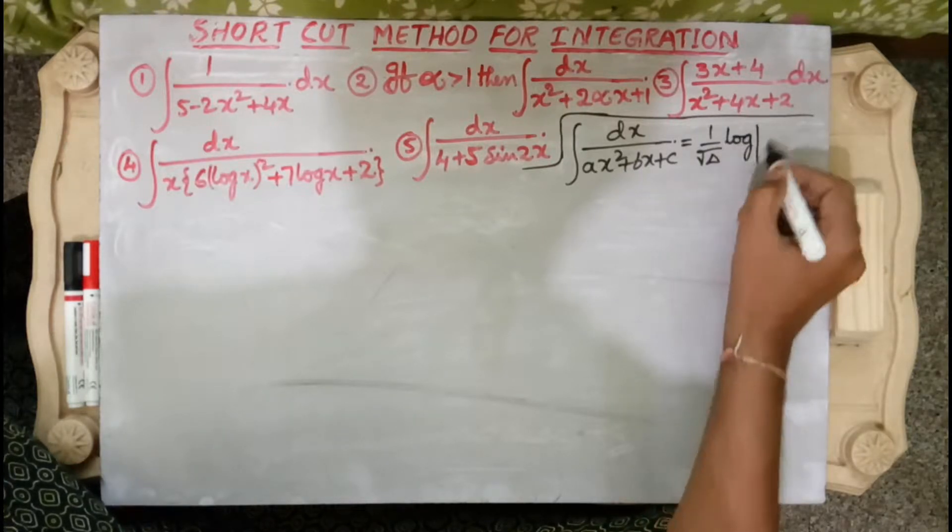The solution is 1 by root delta, here 1 by root 56, times log mod of Q' minus root delta over Q' plus root delta plus c. Q' is the derivative of the quadratic expression minus 2x² plus 4x plus 5, which gives minus 4x plus 4. So the solution is 1 by root 56 times log mod (minus 4x plus 4 minus root 56) over (minus 4x plus 4 plus root 56) plus c.